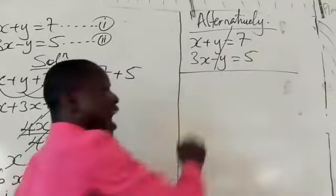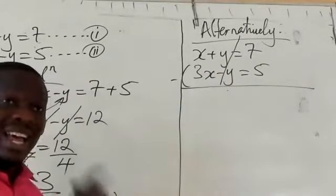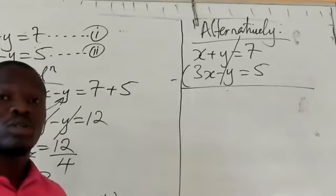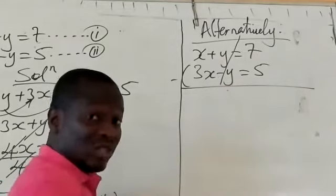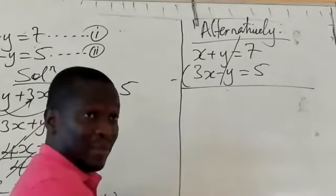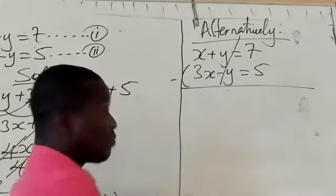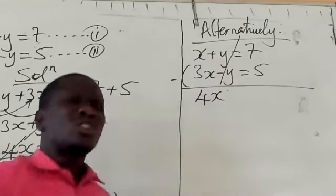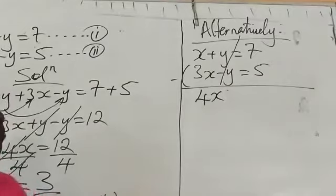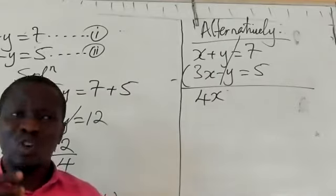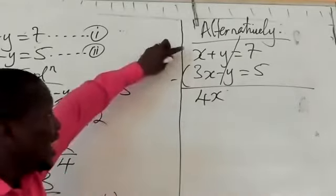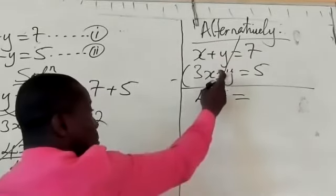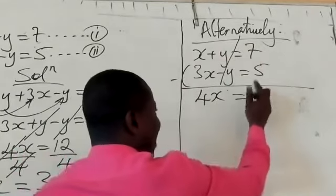So we eliminate y. After eliminating y, we apply sign rules. Remember: plus times minus is minus, and minus times minus is plus. So x plus 3x is 4x. The coefficient of x is 1, so 1x plus 3x is 4x. 4x equals — applying the rule — 7 plus 5 equals 12. So 4x equals 12.